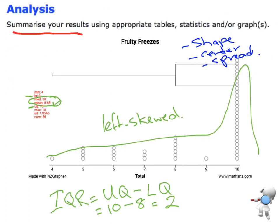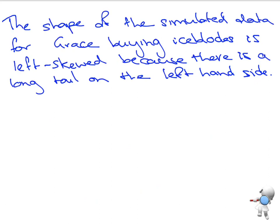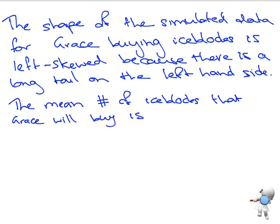Then we want to talk about where the mean is. So there's our mean of 8.68. So we can now say the mean number of ice blocks that Grace will buy is 8.68.